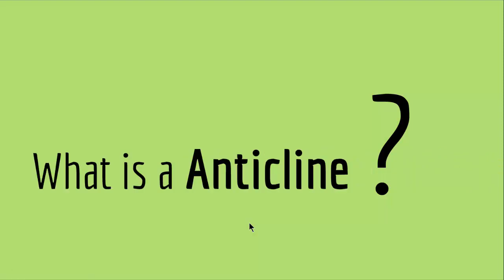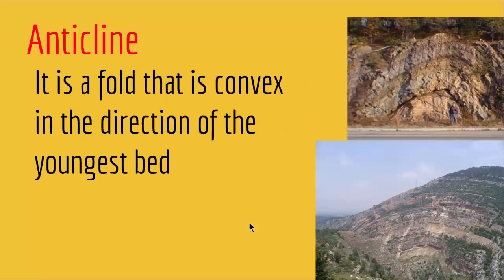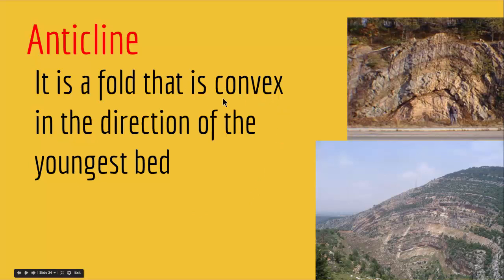The first one is an anticline. An anticline is a fold that is convex in the direction of the youngest bed. If you have beds stacked on each other and you fold them in a way where it's convex in the direction of the youngest bed — just like you see in this picture — then you get an anticline. Anticlines are an upside-down U shape where the folding is in the direction of the youngest bed.